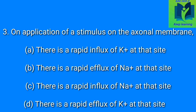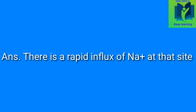On application of a stimulus on the axonal membrane. Option A: there is rapid influx of K+ at that site. Option B: there is a rapid efflux of Na+ at that site. Option C: there is a rapid influx of Na+ at that site. Option D: there is a rapid efflux of K+ at that site. Answer: there is a rapid influx of Na+ at that site.